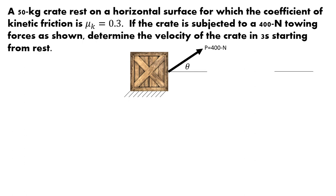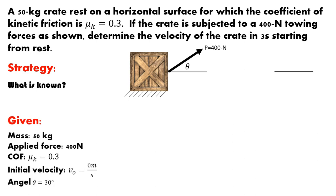Okay, so how are we going to approach this? We're going to need a strategy. So what do we have known? Let's set up a list of givens. The givens: we know the mass is 50 kilograms, we've got an applied force of 400 Newtons, the coefficient of friction is 0.3, the initial velocity is 0 meters per second, so we know it's starting from rest, and we've got an angle of the applied force of 30 degrees.